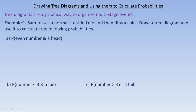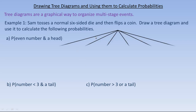We're going to take a look at two examples, one on this page and one on the next. The first one says that Sam tosses a normal six-sided die with one, two, three, four, five, six on it, and then flips a coin — a normal coin with a head and a tail. He's supposed to draw a tree diagram and then use it to calculate three probabilities. So let's say he throws the six-sided die first. The first stage is throwing the die, so he could get a one, two, three, four, five, or six.